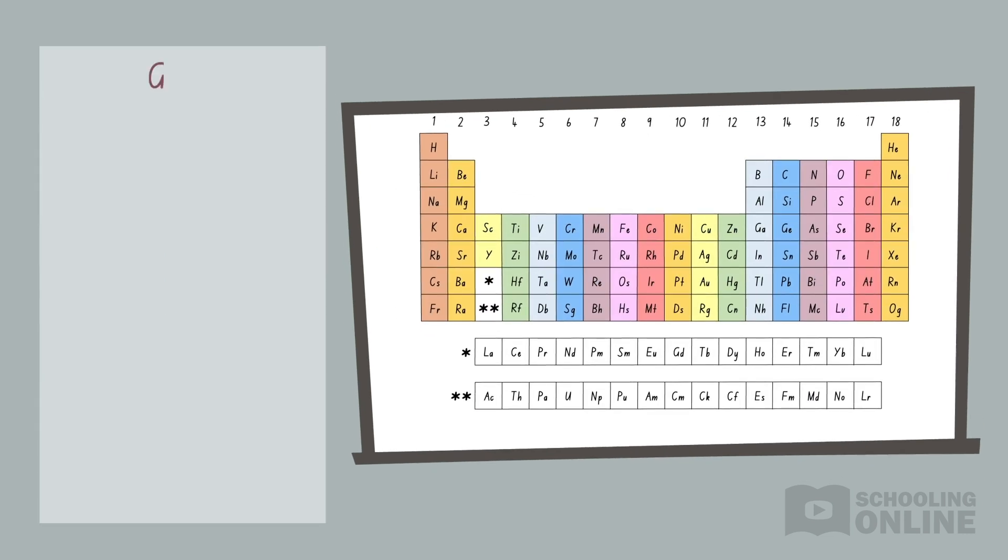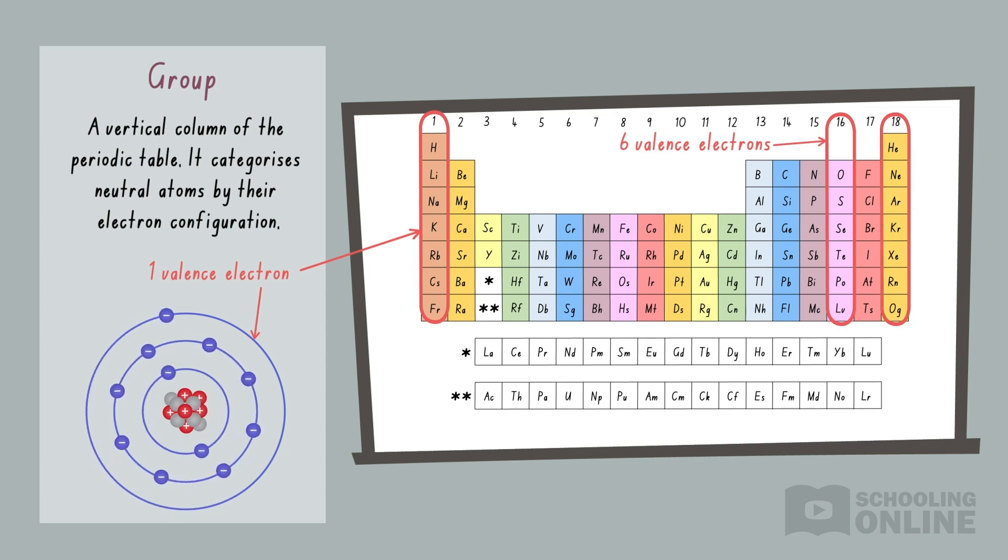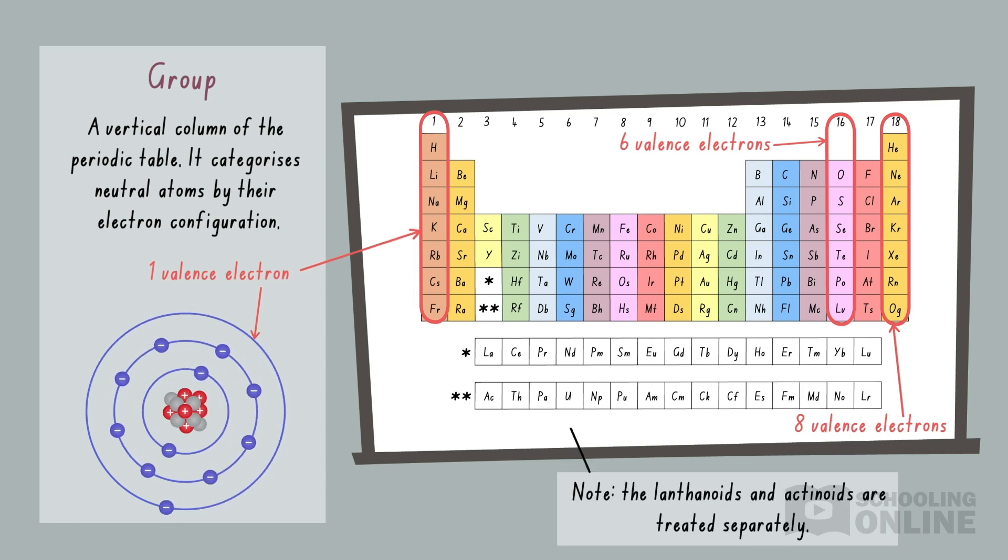On the other hand, a group is a vertical column of the periodic table. It categorises neutral atoms by their electron configuration. In simple cases, the group corresponds to the number of valence electrons. Since sodium is in group 1, it has 1 electron in its outer shell. For the right-hand side of the table, we subtract 10 from the group number. Thus, oxygen is in group 16 and has 6 valence electrons, while krypton is in group 18 and has 8 valence electrons. The rules are pretty complicated, so we'll discuss them in our upcoming videos on electron configurations.